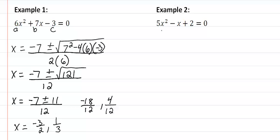Let's take a look at example b. We have a five for our a, we have a negative one for our b and two for our c.